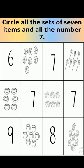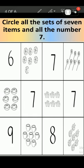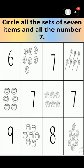We have to count the objects first. Let's count these balls first. 1, 2, 3, 4, 5, 6, 7. Okay, 7 balls are here. So we have to circle this. I found 7 balls.